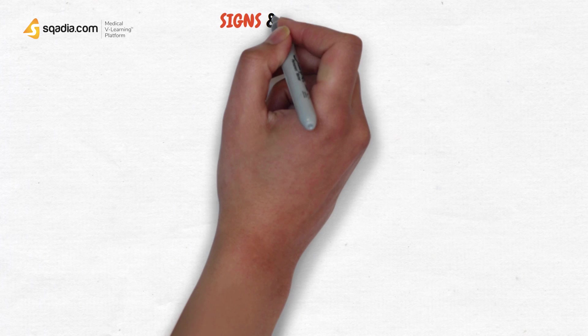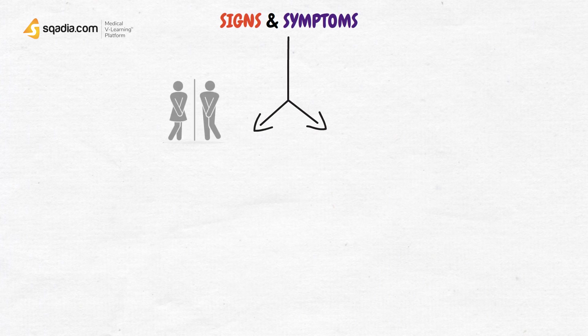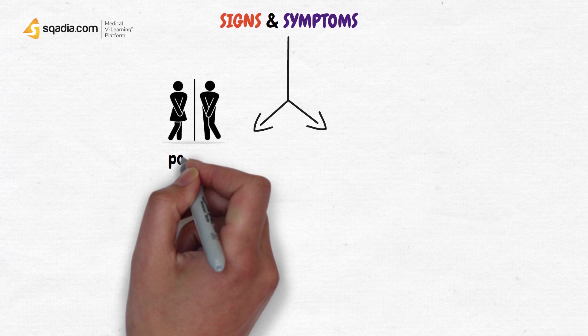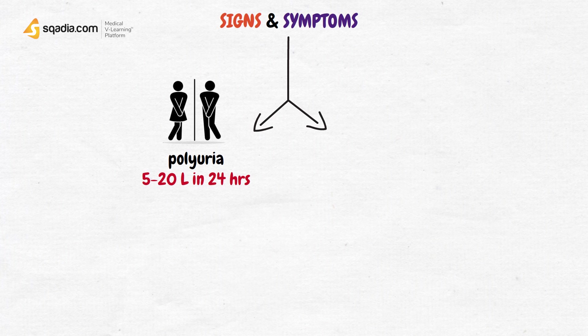The signs and symptoms of diabetes insipidus are quite straightforward, as they include polyuria, with patients passing as much as 20 liters of urine each day, and polydipsia.